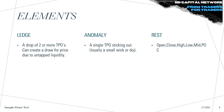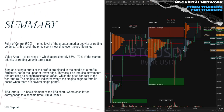In summary: the Point of Control is the price level of greatest market activity. The Value Area represents 68–70% of market activity. Single prints are important imbalance levels I'll explain in detail later. And the TPO letters are the basic element of the chart, where each letter corresponds to 30 minutes of price action.